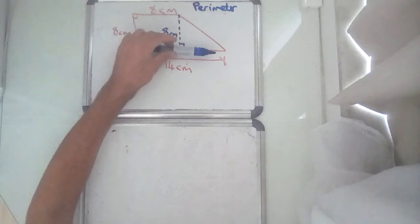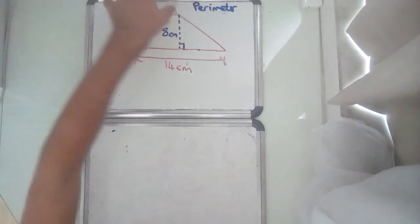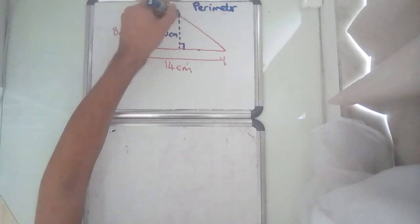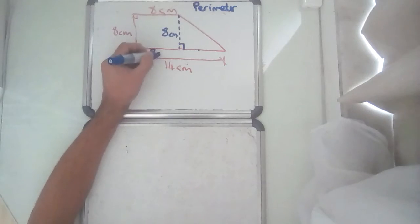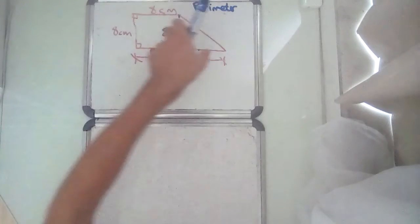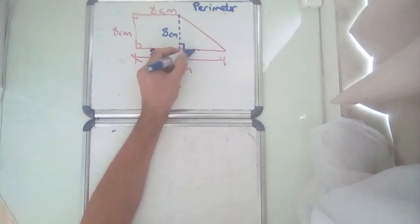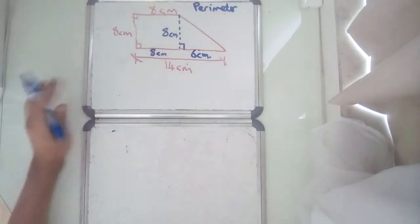Now, if you know that all the way across is 14, and this is 8, well, the difference between 14 and 8, so I can bring this 8 down here, so it's basically 8 plus what equals 14. The what is 6. 6 centimetres there.